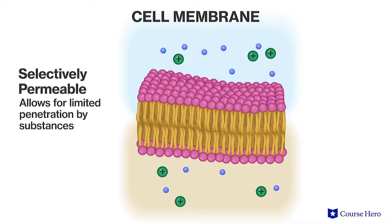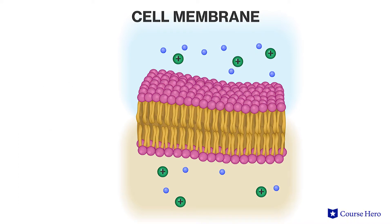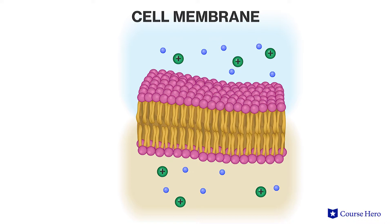In general, charged and large molecules cannot pass through the membrane freely, whereas uncharged and small molecules can. The cell uses a number of mechanisms to transport material across the membrane.